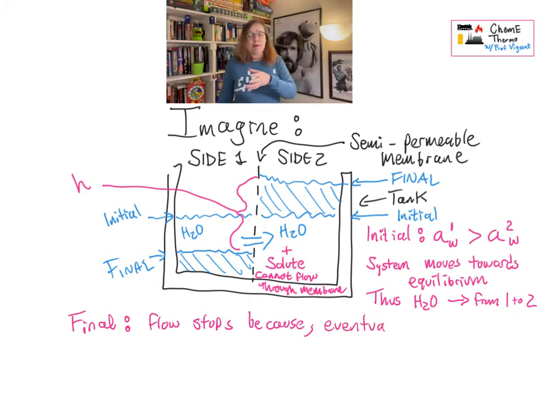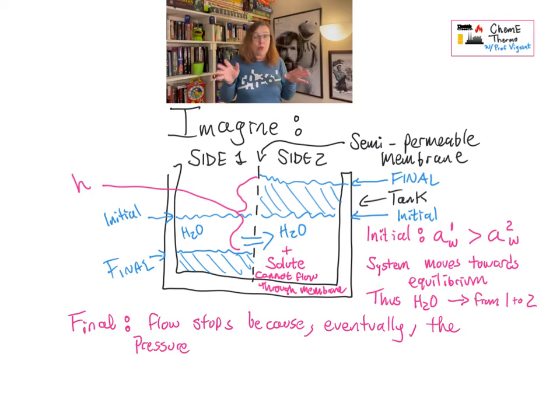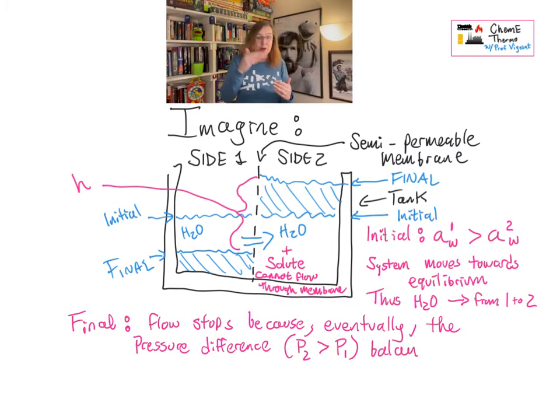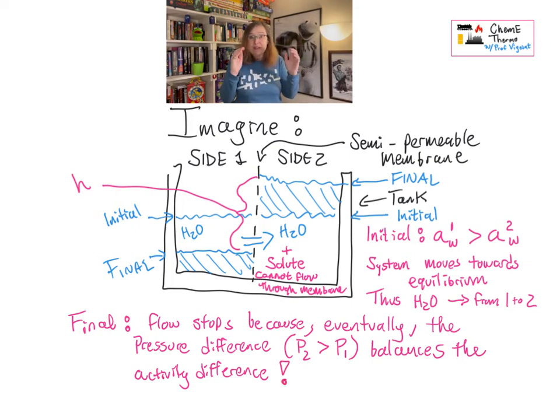So eventually, what's going to happen is flow is going to stop between side one and side two, not because the concentrations are equal. That won't have happened, because the solute can't move. It's going to have stopped, because the driving force created by this activity difference will eventually be balanced by the pressure difference between the left and the right. And that is the part, right? Mind blown, right? We have something that's like activity, which you can't touch or feel or smell, but activity can create a height difference that we could actually measure if we could set this up physically. That's so cool!